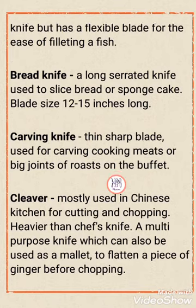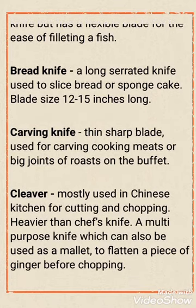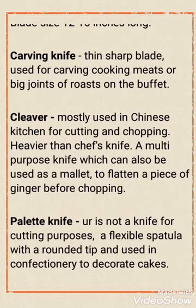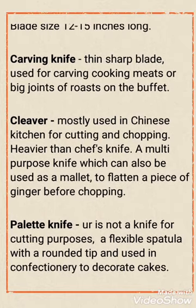Next one is the carving knife. The carving knife has a very thin blade and is used for carving cooked meats or big joints of roast on the buffet.